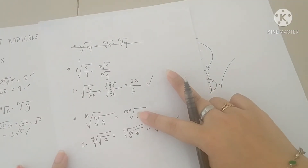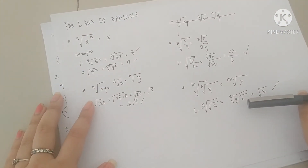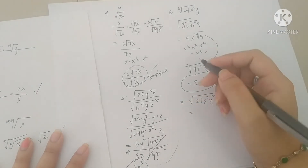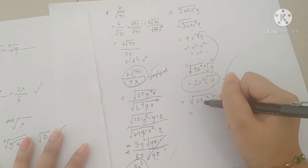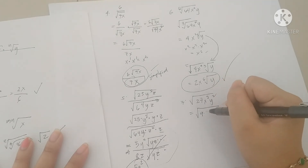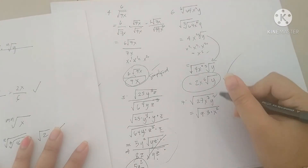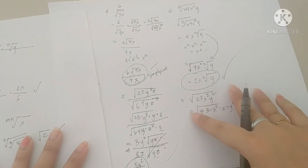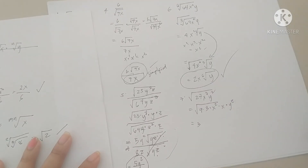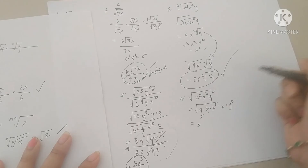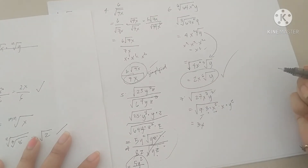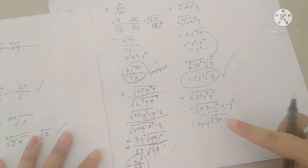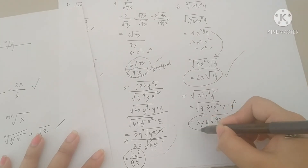Now, this next one falls under the product law. We have square root of 27x³y². We factor it as square root of 9 times 3 times x² times x times y². Square root of 9 is 3. Square root of 3 doesn't have a root, so we keep it. Square root of x² is x. Square root of x has no root, so we keep it. Square root of y² is y. The remaining factors 3 and x stay under the radical. So our final answer is 3xy√(3x).